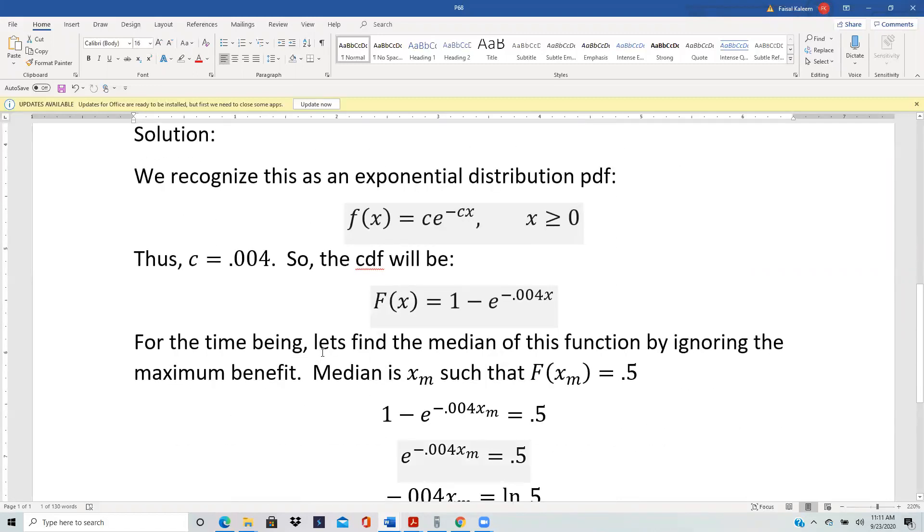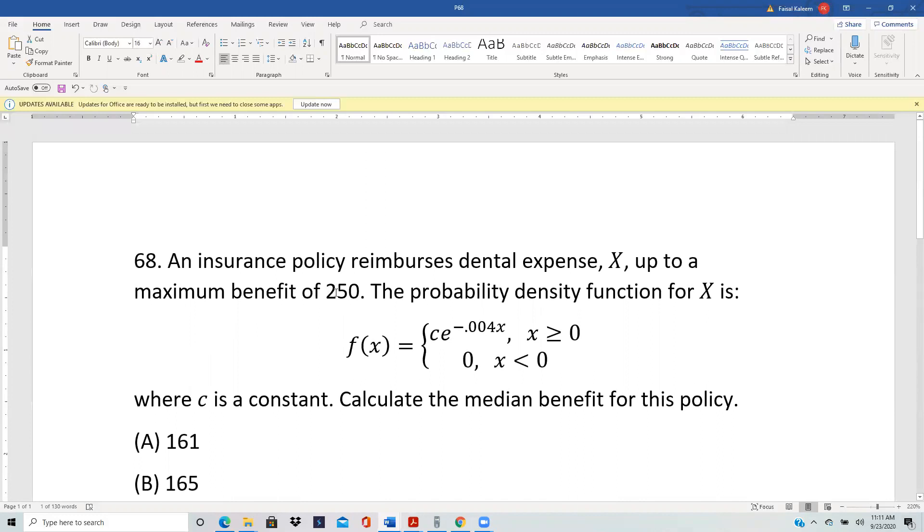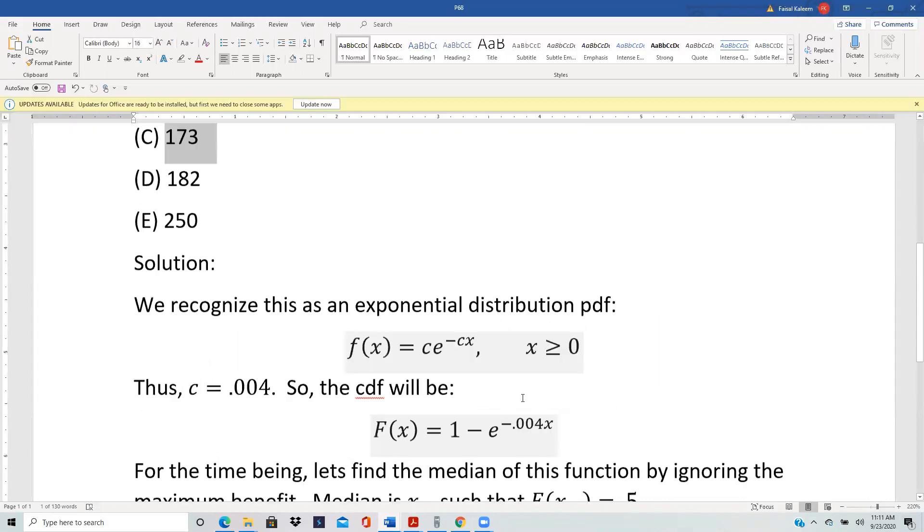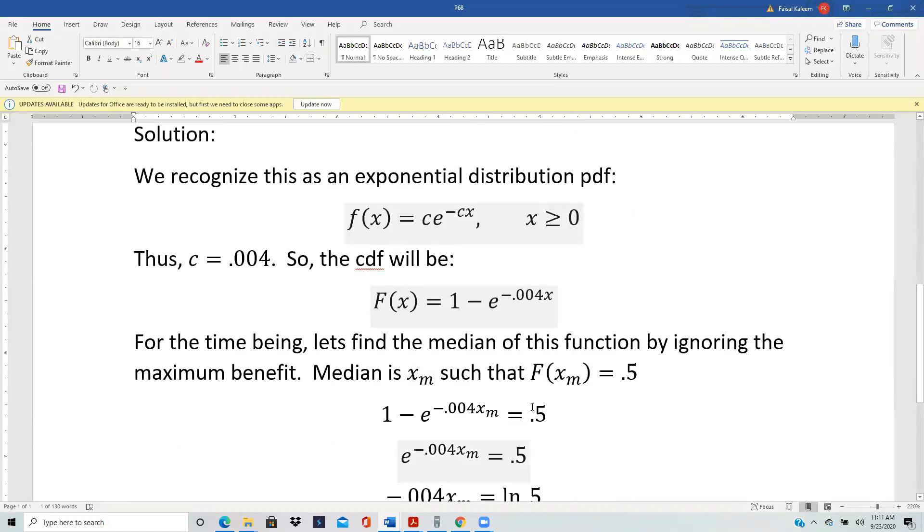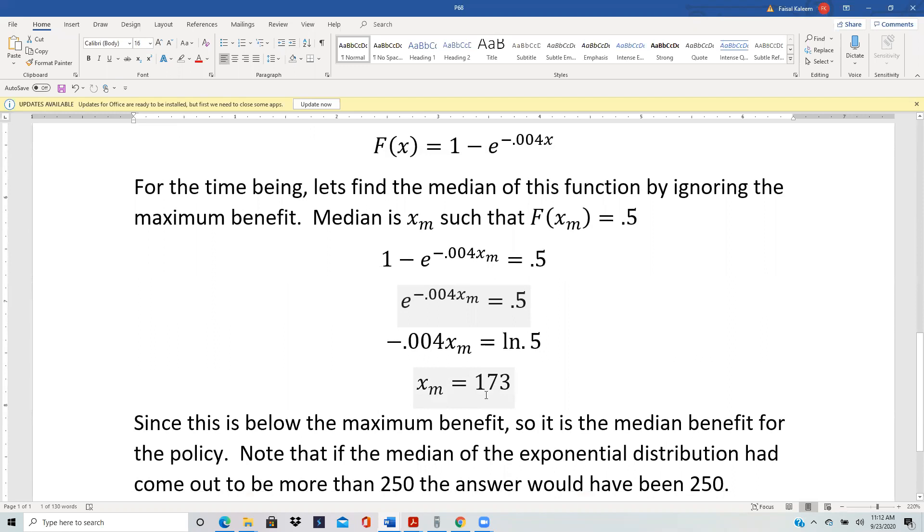For the time being, forget about this maximum benefit being 250. Let's just calculate the median for this exponential and then we'll return to this 250. So the median is that x value for which F(x) is 0.5, the big F of x. And so you set x equals xm where xm stands for the median, and you get 1 minus e to the negative 0.04xm equals 0.5, and solve xm equals 173.